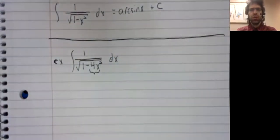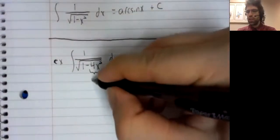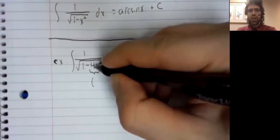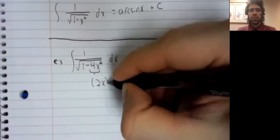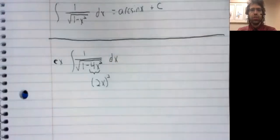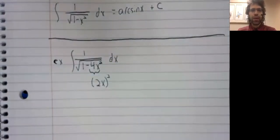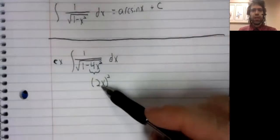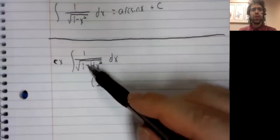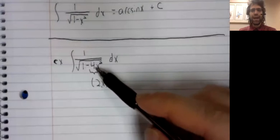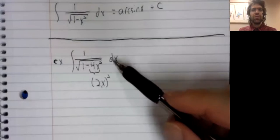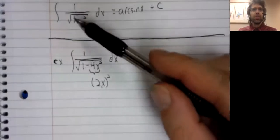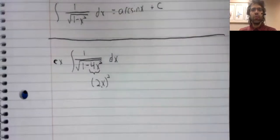We could try a bit of u substitution, in the sense that four x squared is the same as the product two x, squared. So if we let u be two x, this would be one minus u squared. And assuming that we can get rid of this dx, we could then use this formula.